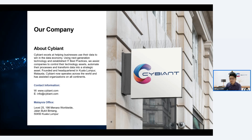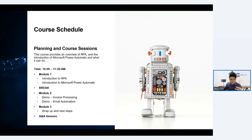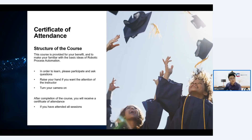For today, it's a one-and-a-half-hour session from 10 until approximately 11:30. We have two modules: first is the introduction to RPA and to Microsoft Power Automate, then after a short break there will be two demos followed by a wrap-up and Q&A. We are flexible with the schedule. A certificate of attendance is available on request, and we encourage you to ask questions along the way.